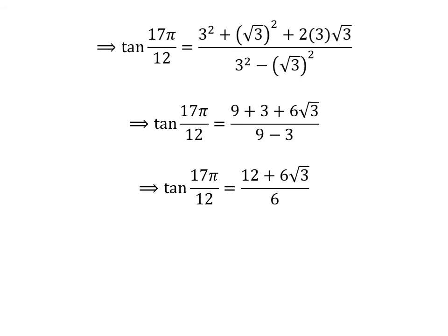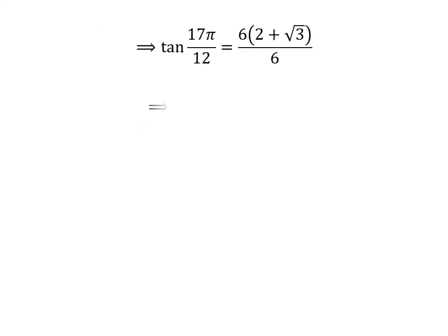Further simplification gives us tangent of 17 times pi upon 12 is equal to (12 plus 6 times square root of 3) upon 6. Taking out the common factor 6 in the numerator and cancelling it with the denominator gives us tangent of 17 times pi upon 12 is equal to 2 plus square root of 3.